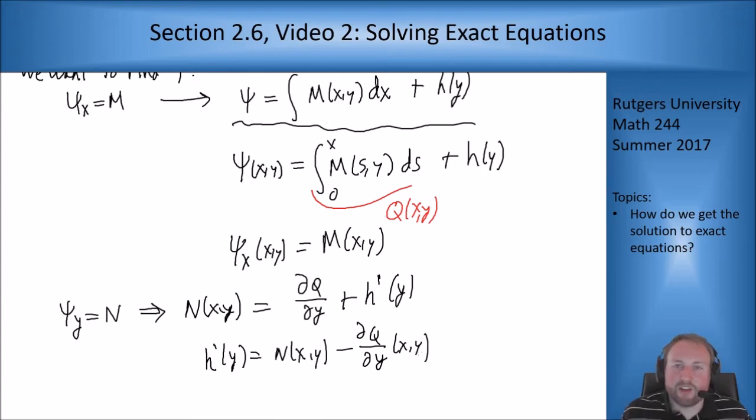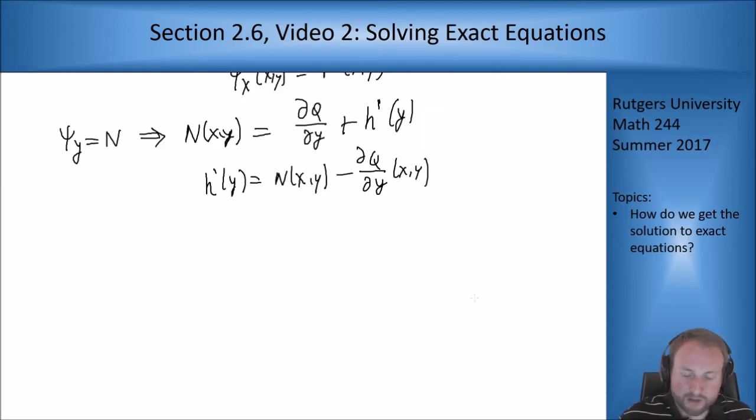Now if I am to solve this equation, I better have that this right hand side only depends on y. If there's any x that's still floating around, then I can't do this. So how do I check if something is independent of x? Well, I take its x derivative and see that I get zero. So can this be solved?